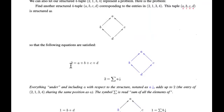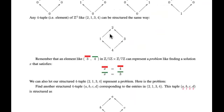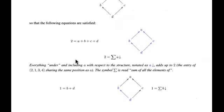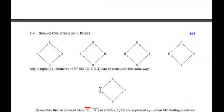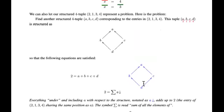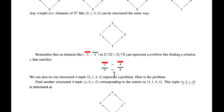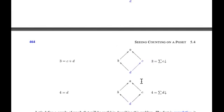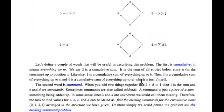The equations are given simply by taking each entry — for example, two — and wanting it to be the sum of everything at that point and below it in what we're looking for. Then one is the sum of everything in the solution up to that point, which is b plus d. And three is c plus d, and four is just d itself.